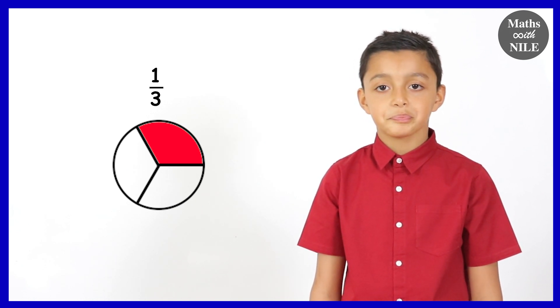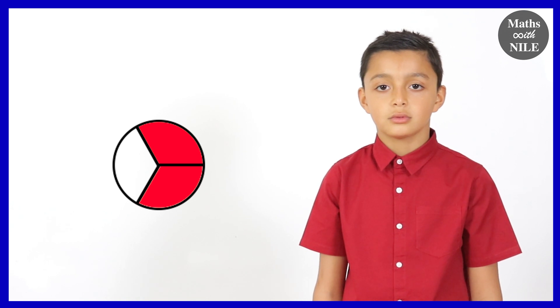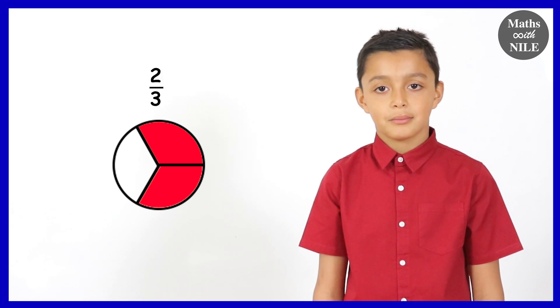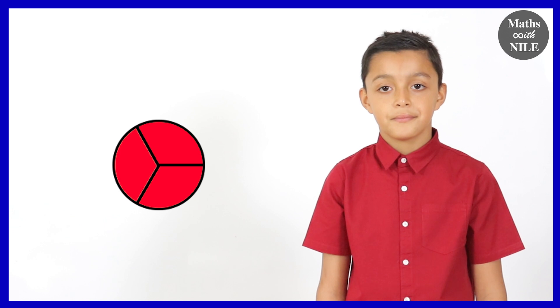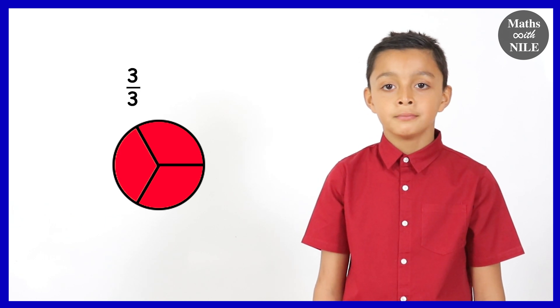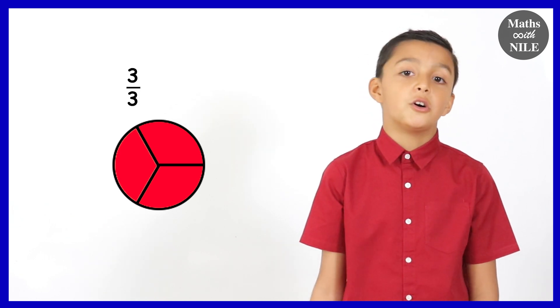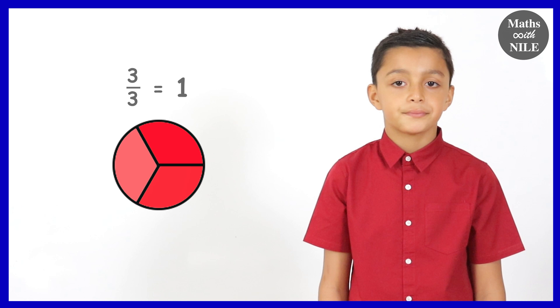So what if we put two of these pieces together? What do we get? Two thirds. And if we put all three of them together again? Three thirds. Which is also equal to? One whole. One whole. Good. Very good.